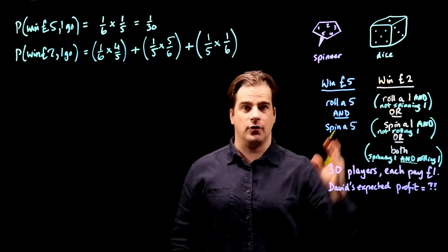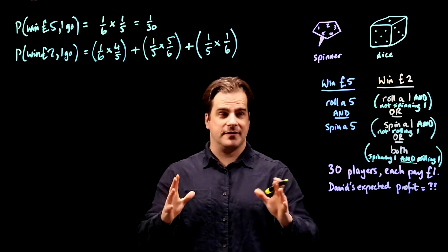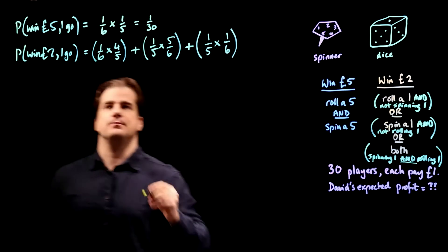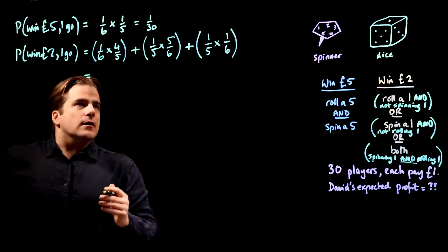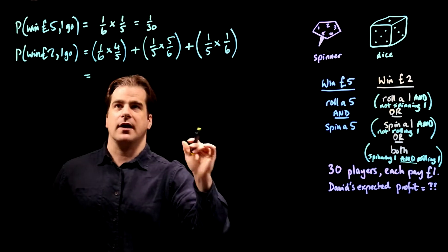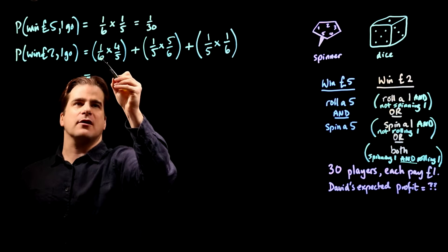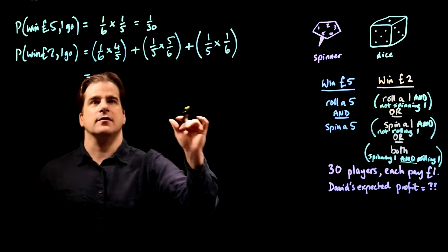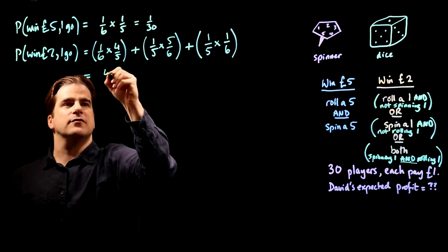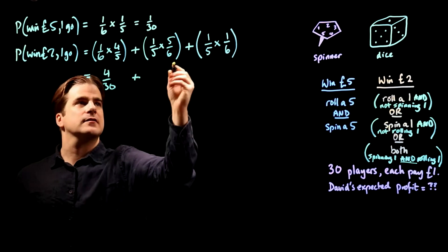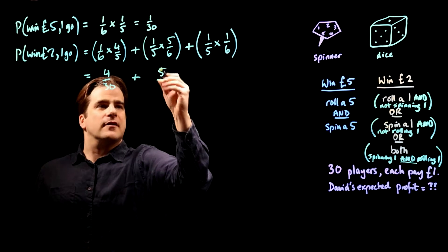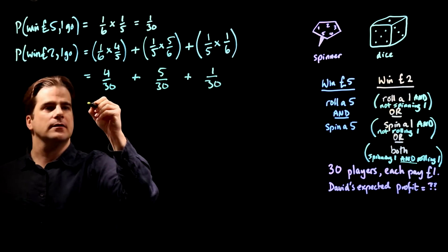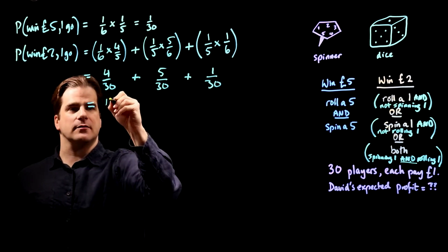That is the probability of winning two pounds with one go. So let's work it out. I'm going to leave 30 on the bottom. Six times five is 30. So it's four thirtieths plus — five times six, 30 on the bottom — five thirtieths plus one thirtieth. Four plus five is nine, plus one is ten. So it's ten thirtieths.